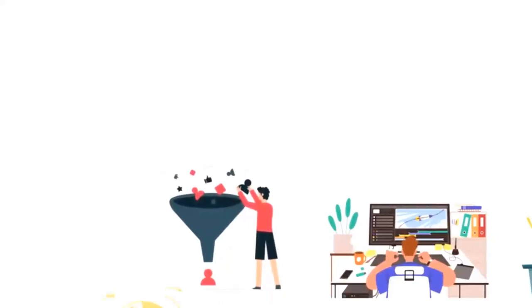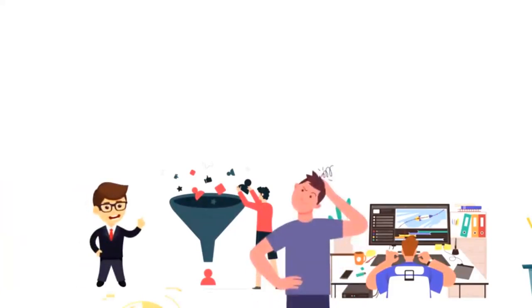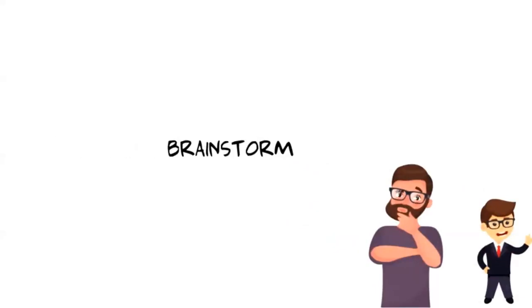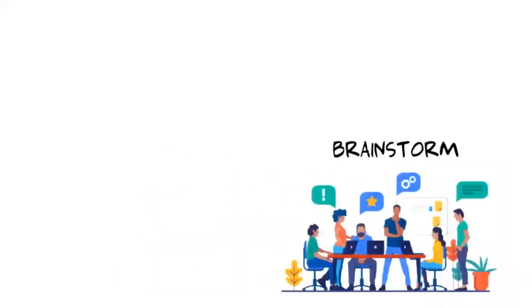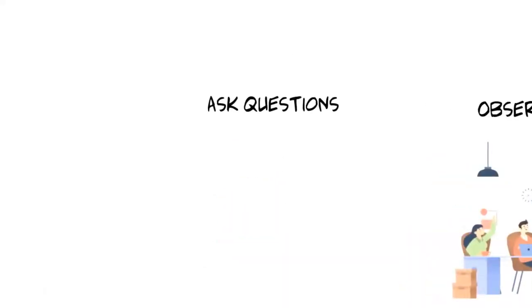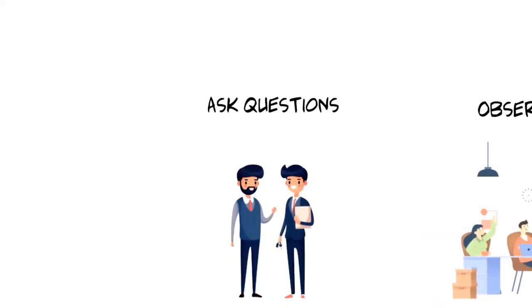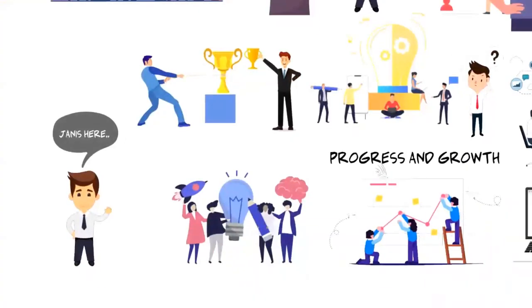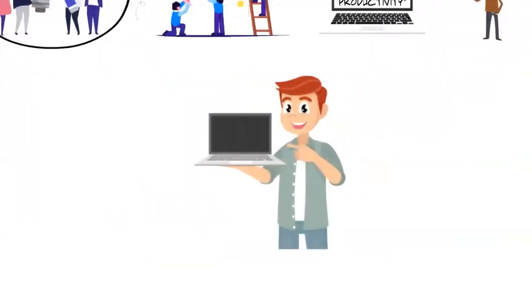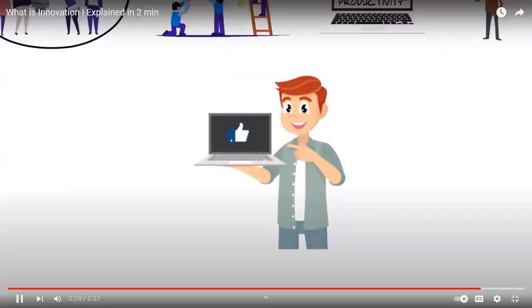When you build a sales funnel there are so many ways to do it, so test out different options — you might come across something that converts really well. Here are some strategies to get started: first, brainstorming — the best way to come up with something new is to brainstorm on your own or with your team. Second, observe — watch how people do things, as this often indicates their motivations and desires. Third, ask questions, as that can lead to new discoveries.